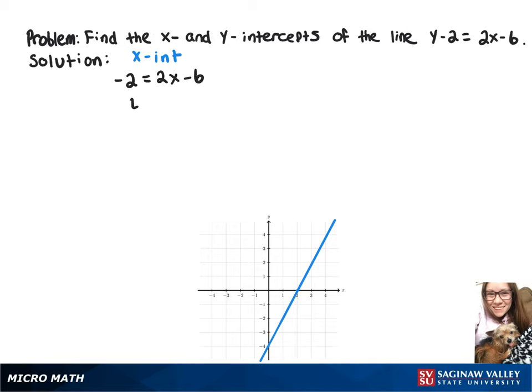And then adding 6 to both sides gives us 4 equals 2x, and dividing both sides by 2 gives us 2 equals x. So our x-intercept is 2, 0.